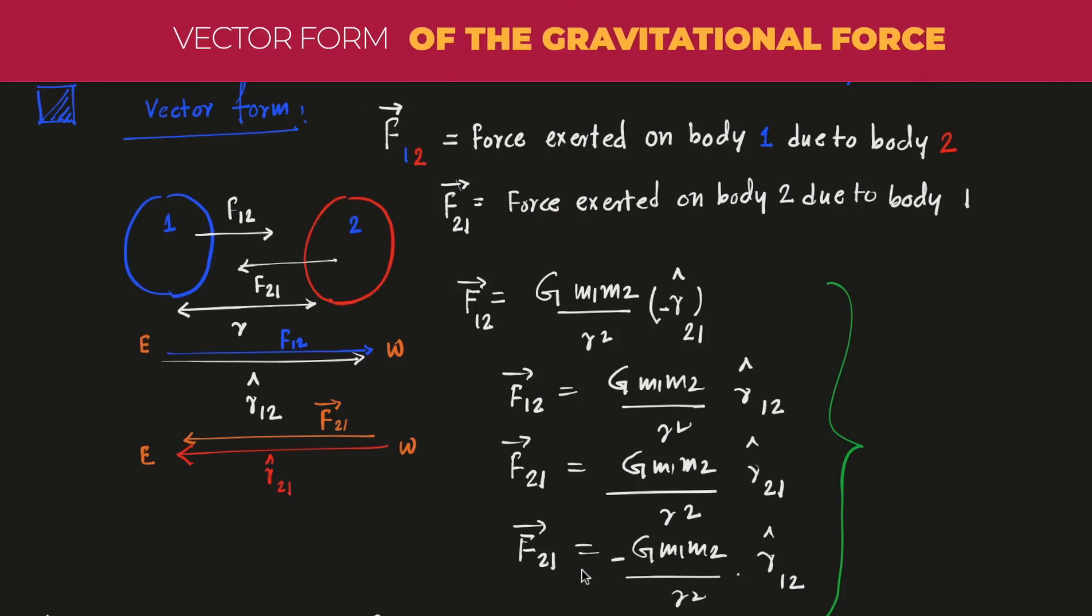Vector form of the universal law of gravity. This part is a little bit confusing, it's not very difficult but you need to understand this particular point. As you can see from the diagram, there are two objects.